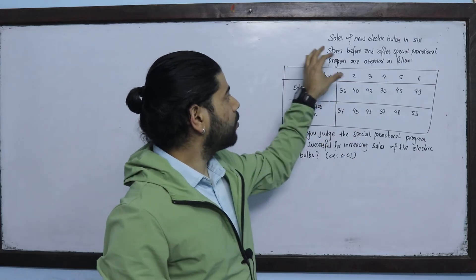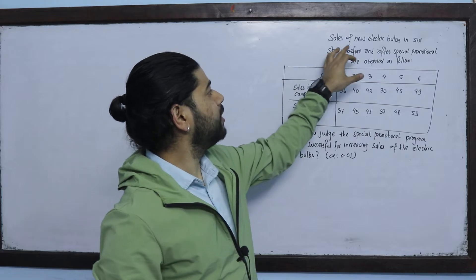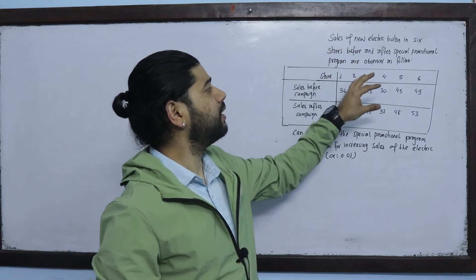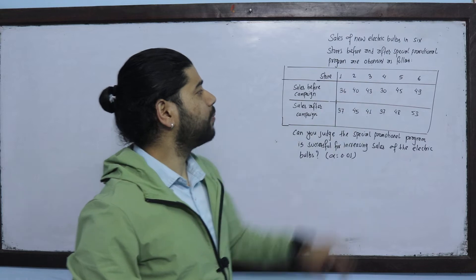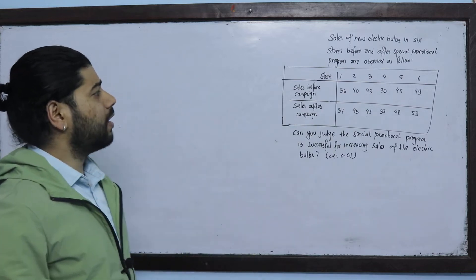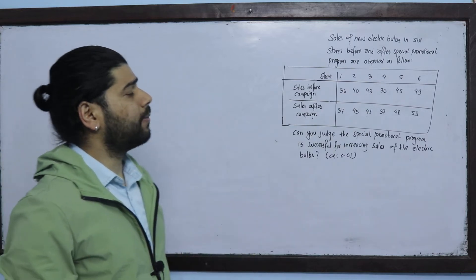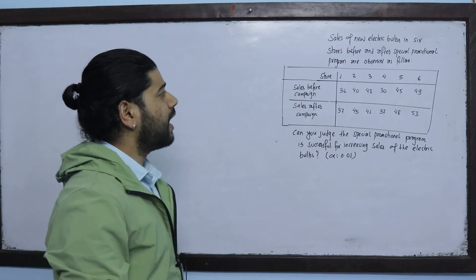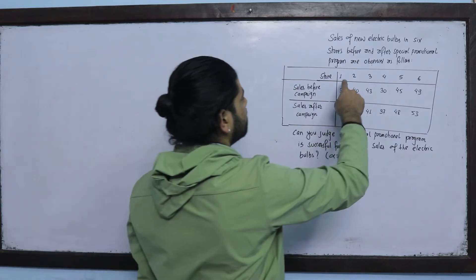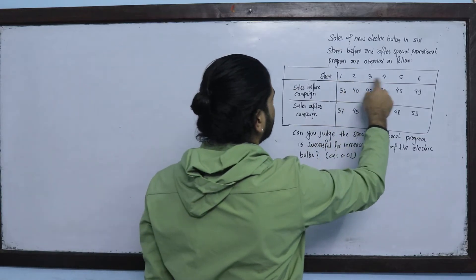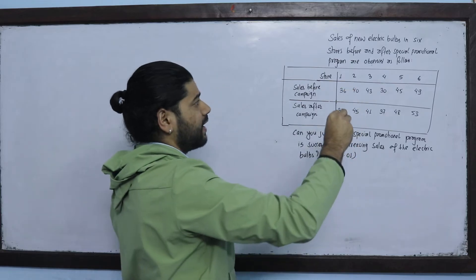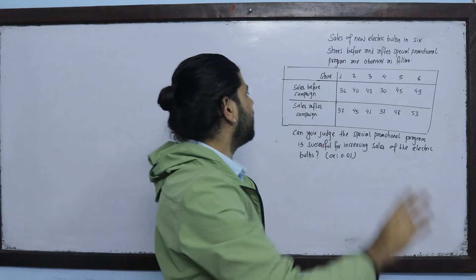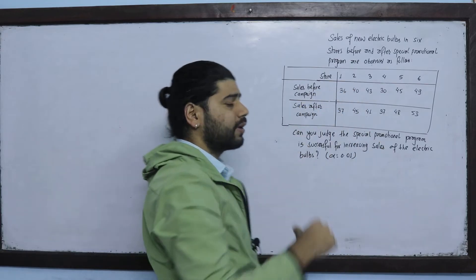Now this question is: the sales of new electric bulbs in six stores before and after a special promotional program are observed as follows. Six electric shops — the sales record of the electric bulb.